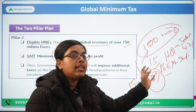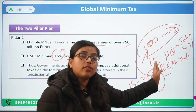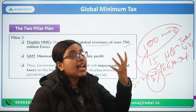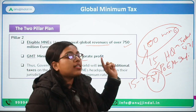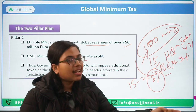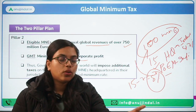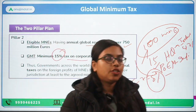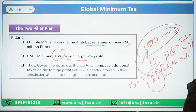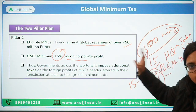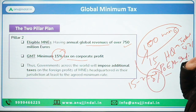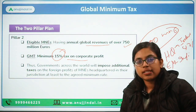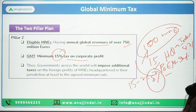If the place of effective management is also a tax haven country, then in that case the subsidiaries located in other countries will have the top-up tax available to them. So this is the second pillar, and it is to this 15% global minimum tax rate that the EU members have agreed to implement.